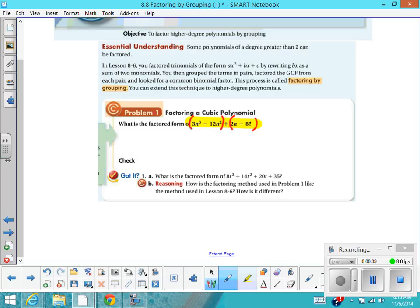From this first grouping here, you can hopefully see that the GCF is 3n², and that's times the quantity of n - 4.